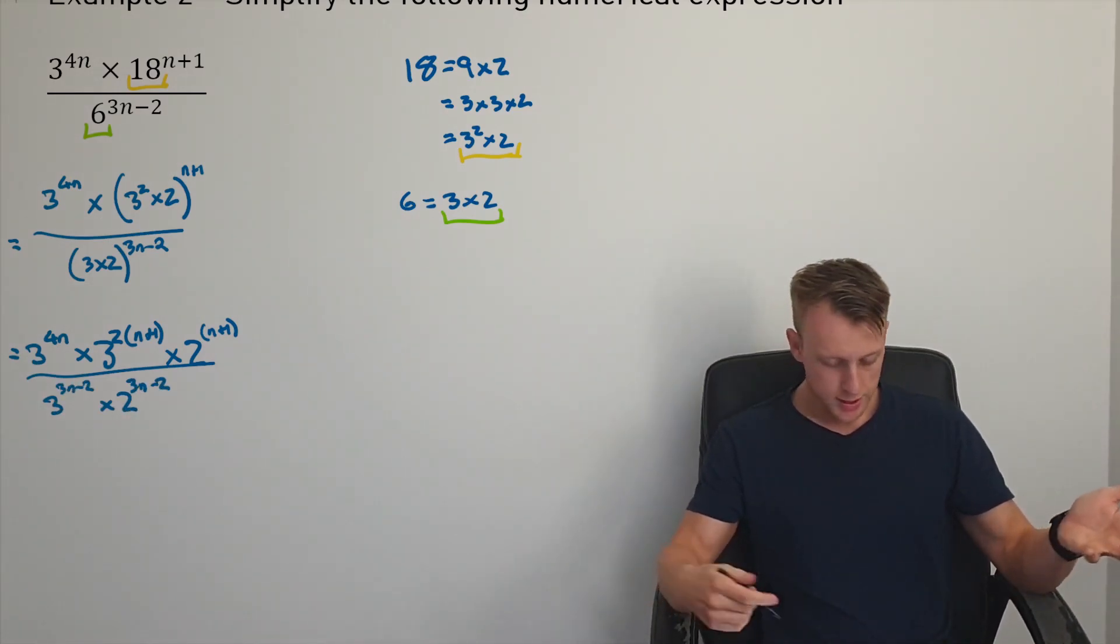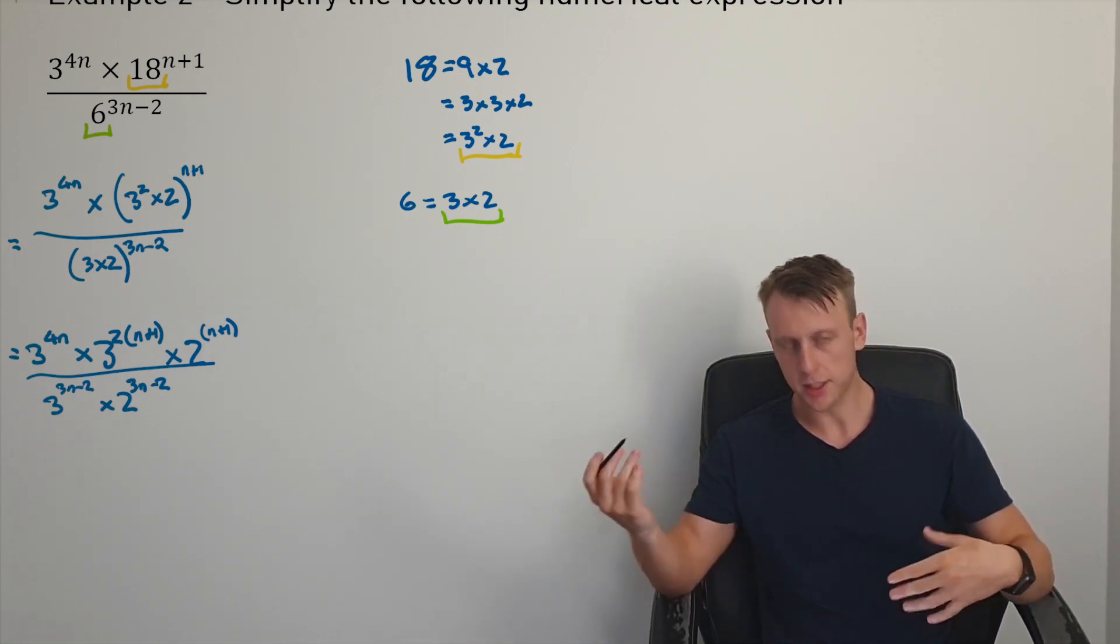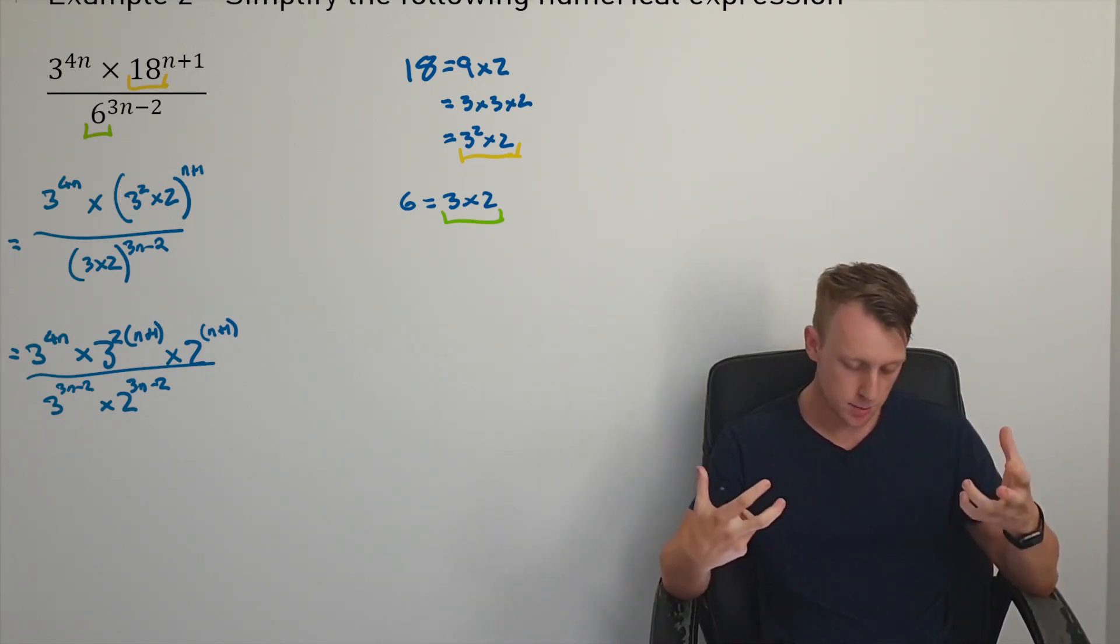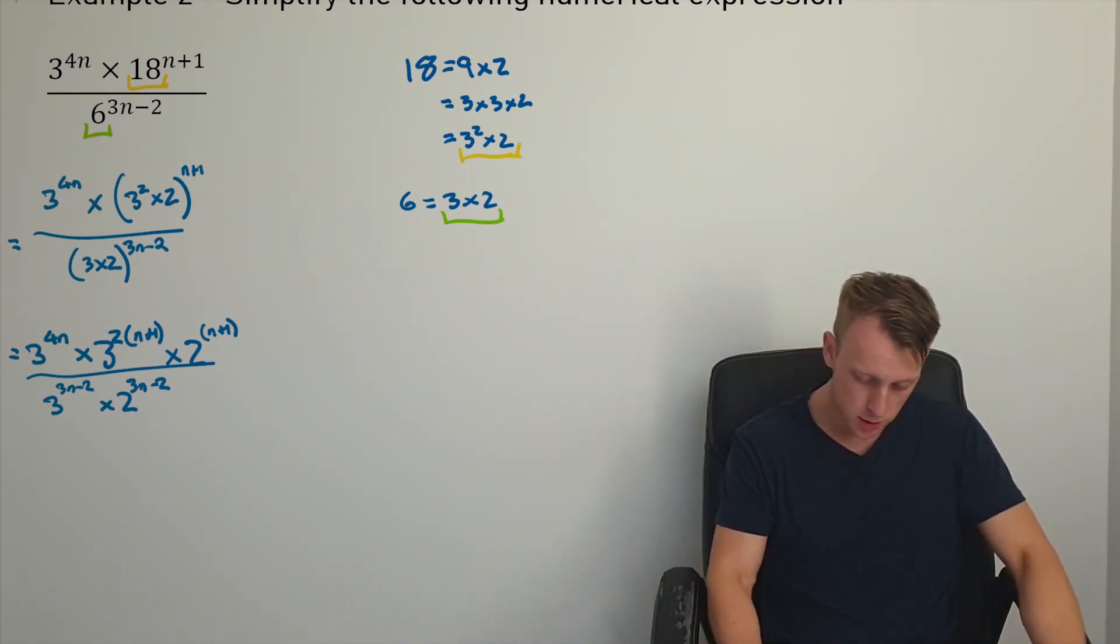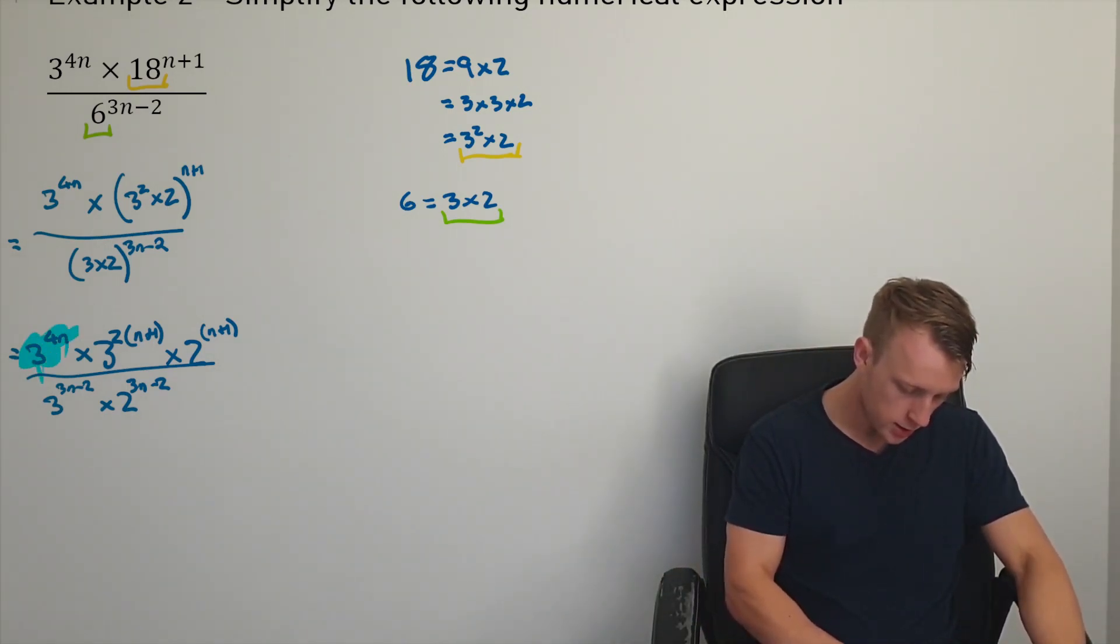And so here we see, well, we've got 3s and 2s as base numbers. On the numerator, I've got two terms. This guy here, and this guy here. I'm going to bring those terms together.